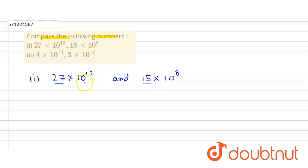So here we just simply compare these powers of 10. By comparing we can simply say that 27 into 10 raised to power 12 is greater than 15 into 10 raised to power 8, because 12 is greater than 8. So this number will be greater than the other number.